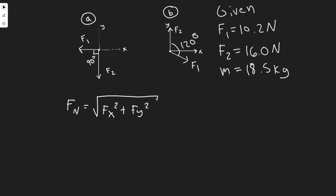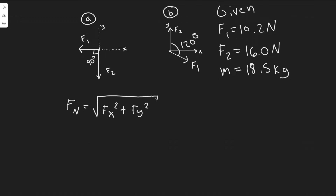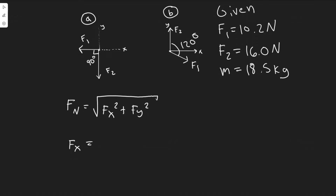First let's find all the forces in x. F1 is 10.2 newtons and it's along the x axis. Forces to the left are negative and downward is negative, while right and up are positive. Since F2 is along the y direction, the only force in x is F1, so Fx equals negative 10.2 newtons. We square it so the negative doesn't matter.